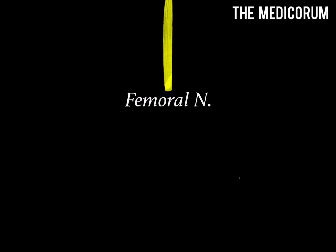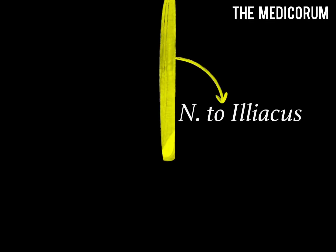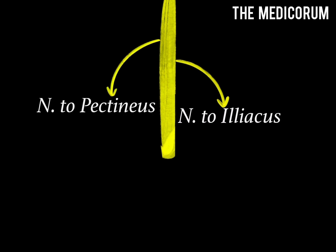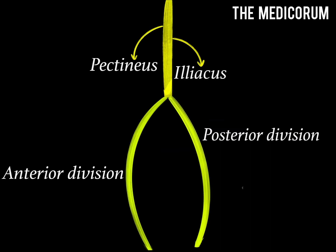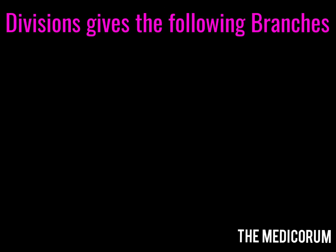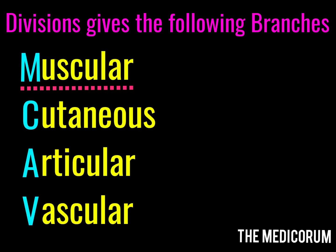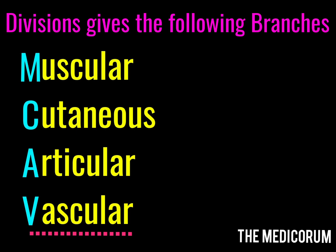Looking at the branches of the femoral nerve, it gives direct branches to two muscles: the nerve to iliacus and the nerve to pectineus. Then the femoral nerve divides into posterior and anterior divisions, and both divisions give muscular, cutaneous, articular, and vesicular branches.